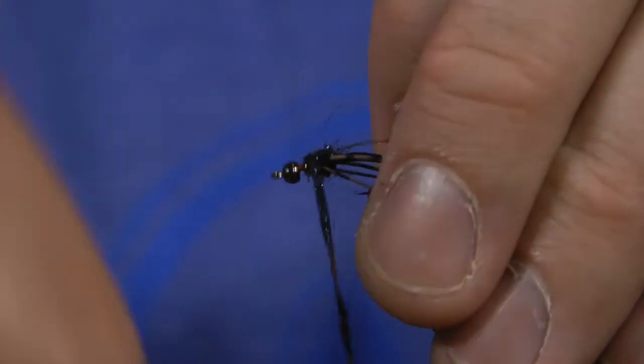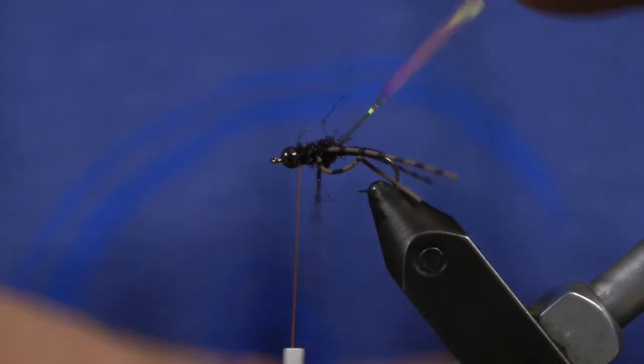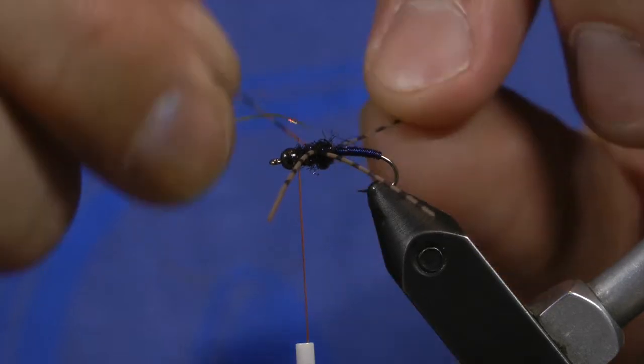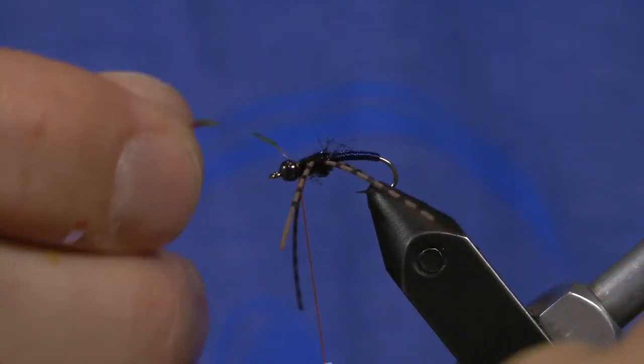Once that's in, we'll wrap dubbing the rest of the way up right behind the head. Then we bring that opal tinsel over the back.